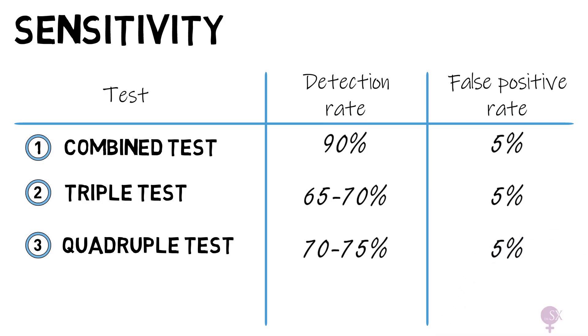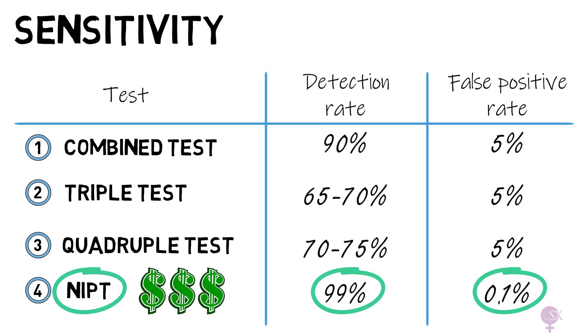Now for NIPT, this has a detection rate of 99% and a false positive rate of 0.1%. Very clearly, we can see that in comparison, NIPT is the most sensitive test. One thing to keep in mind, however, is that this test comes at quite a hefty cost.